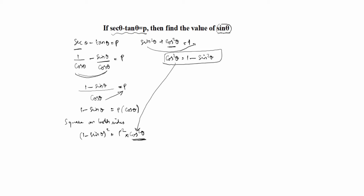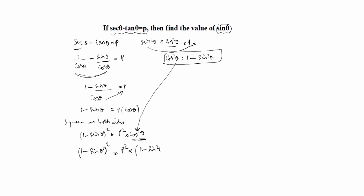So we have 1 minus sine theta, the whole square, equal to p squared into 1 minus sine squared theta. Why do we change cos squared theta to sine? Because we need the value of sine theta — that is why we changed cos theta to sine.